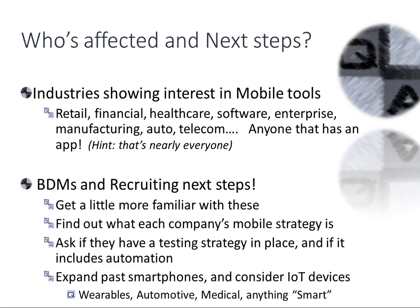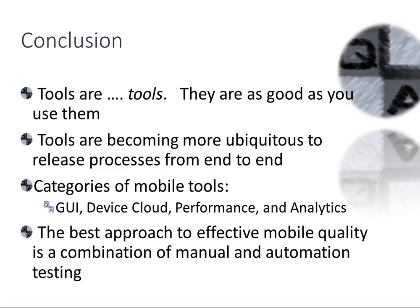Next steps: first, get more familiar with these different tools. Start looking at what tools are in these four groupings, and you'll start seeing these names on resumes and job descriptions. 'Oh, you must have Appium experience' means you want someone that knows Android and has written automation against an Android device. 'You must know Selenium testing' means you need someone who knows how to test and automate against websites. Let's go back and see what category each tool falls under.